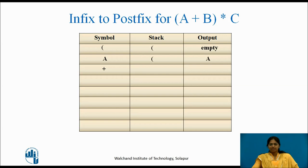The next symbol is '+' — as it is an operator, it is pushed onto the stack. The stack now has the opening bracket and '+'. The output remains 'a'. The next symbol is 'b' — as it is an operand, it is sent to the output, so the output is 'a, b'. The stack has bracket and '+'. The next symbol is the closing bracket. We pop elements inside the bracket and place them in the output. After popping, the stack is empty and the output is 'a, b, +'.